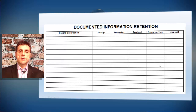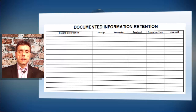We first have to identify the record that we want to maintain. Then, according to the standard, we have to identify the storage of the record, the protection of the record, retrieval, retention time, and disposal. Each of these categories is referenced in ISO 9001-2015 standard, and therefore we are obligated to identify them for each record we want to retain.